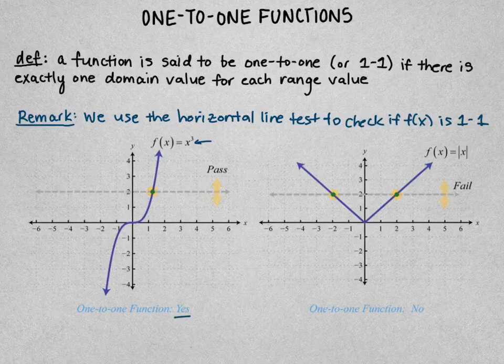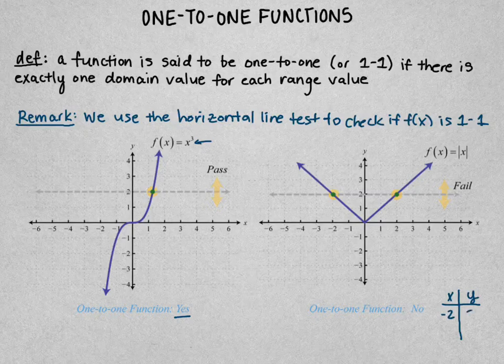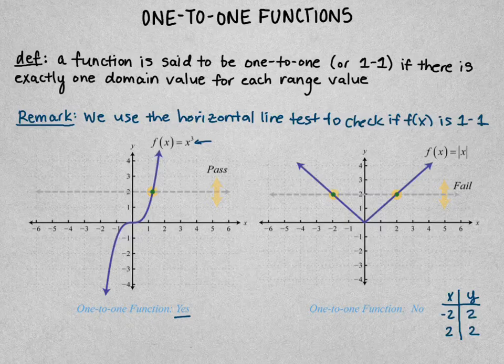Now if we look at this second function, f(x) = |x|, and make an x-y table, we see that when x is negative 2, y is 2, and when x is positive 2, y is also 2. So we've got one y value that has two x values. This fails our horizontal line test, and it's not one-to-one.